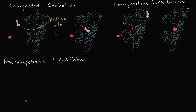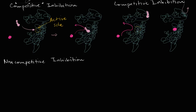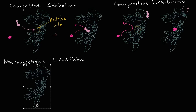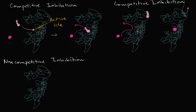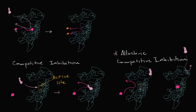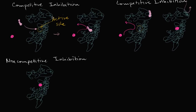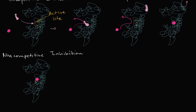So this is my enzyme right over there. If the substrate is able to get to the active site, then the reaction is going to be catalyzed — we saw that: substrate binds to the active site, the reaction is catalyzed, and the substrate got broken up into two other molecules. But in non-competitive inhibition, what happens is the substrate can bind, and so can an inhibitor.